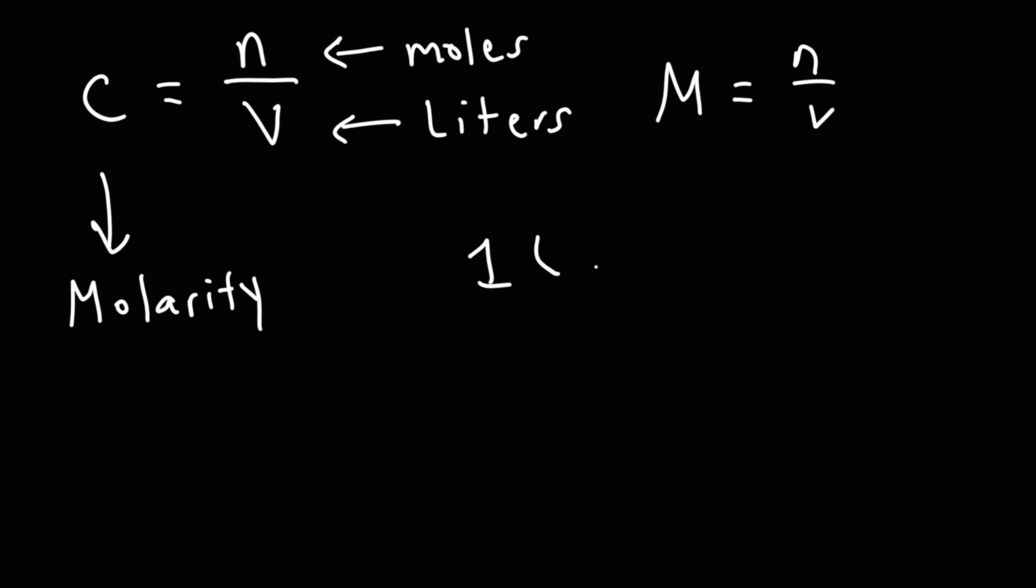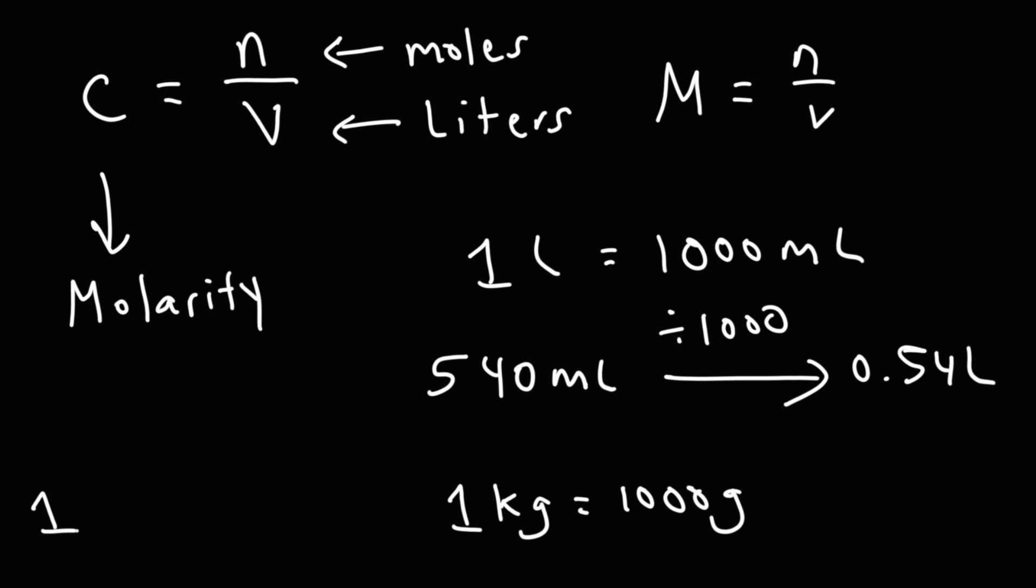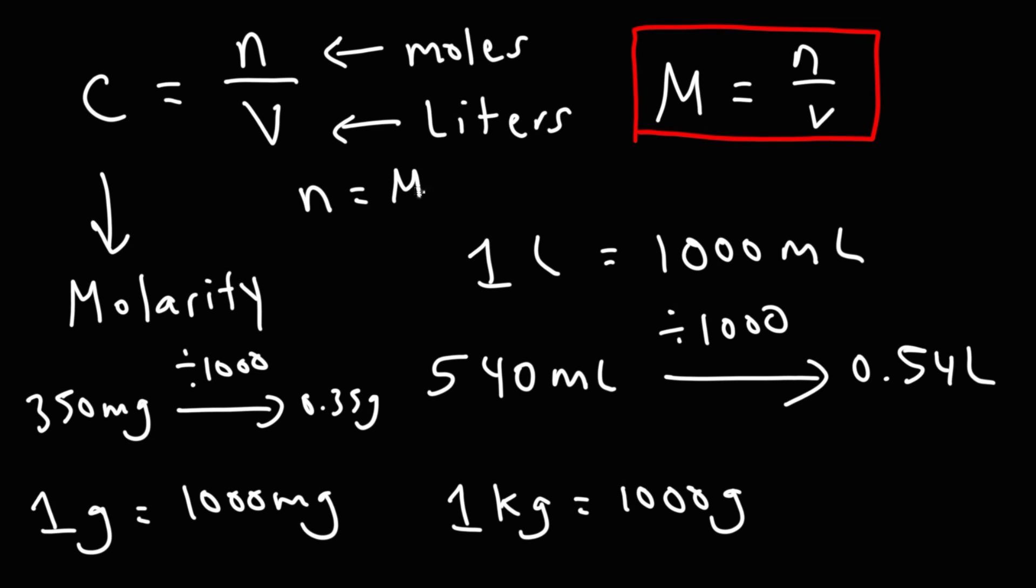Now, remember, one liter is 1,000 milliliters. So, if you're given the volume in milliliters, let's say if you have 540 milliliters, to convert that to liters, simply divide by 1,000. And this would be 0.54 liters. Also, one kilogram is 1,000 grams and one gram is 1,000 milligrams. So, in the event that you're given the mass in milligrams, and you need to convert it to grams, divide by 1,000. 350 milligrams is 0.35 grams. But whenever you need to calculate the molarity, it's moles over volume. If you need to calculate the moles, it's going to be the molarity times the volume.